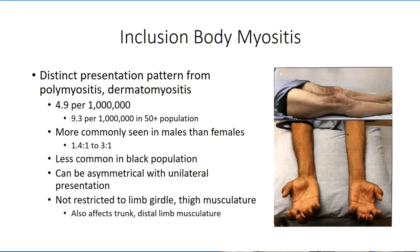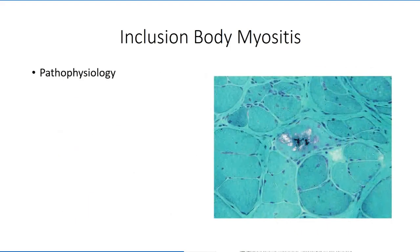The total prevalence is 4.9 per 1 million, with this rate being twice as high in an older population. Inclusion body myositis is also unique in that it can be unilateral and affect distal limb musculature. Although inclusion body myositis has an inflammatory component and is included in the inflammatory myopathy classification, the pathophysiology of the disease is still unclear and unlike that seen for the other two conditions.